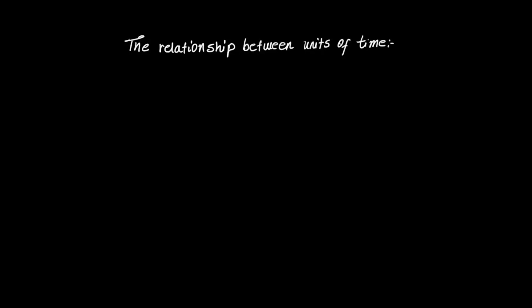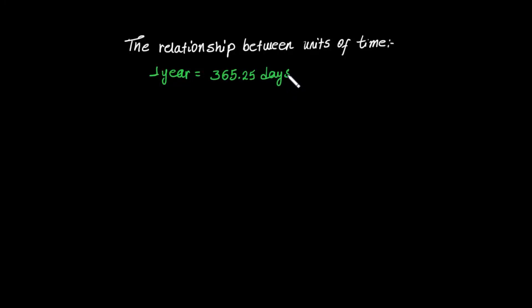The relationship between units of time: one year is equal to 365 days and 6 hours. One year has 12 months.